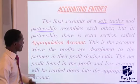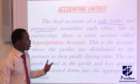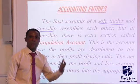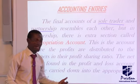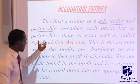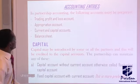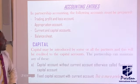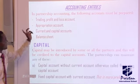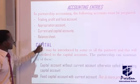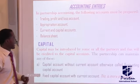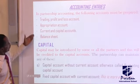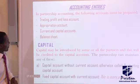Under a normal trading profit and loss account, when you have your net profit you take it straight to the balance sheet. But in the case of partnership accounts, the net profit will be taken straight to the appropriation account. The accounts expected of you to prepare are: the trading profit and loss account, the appropriation account, the current and capital accounts, and the balance sheet.